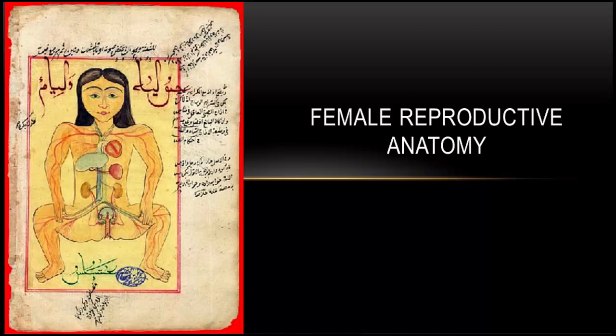Let's say a few words about the anatomy of the female reproductive tract. I will use the common clinical terms for these structures, the ones that you will hear in the operating room and around the wards. For example, fallopian tube and not uterine tube.